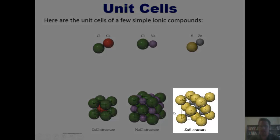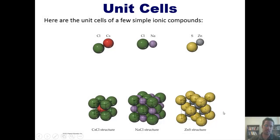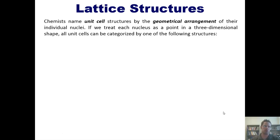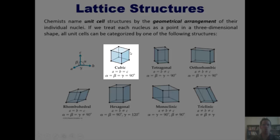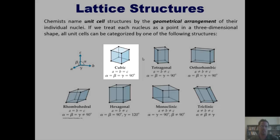Now I want to teach you about lattice structures. Chemists name unit cell structures by the geometrical arrangements of their individual nuclei. If we treat each nucleus as a point in a three-dimensional shape, then all unit cells can be categorized by one of the following structures. If each of the nuclei form a repeating cube where all distances between the nuclei are equal and all angles are 90 degrees, we call that unit cell a cubic unit cell.